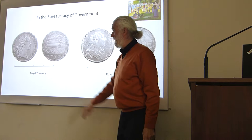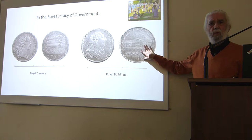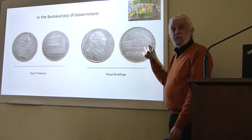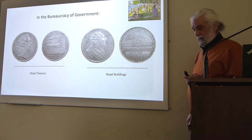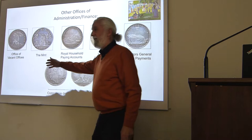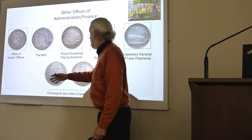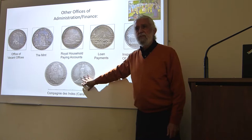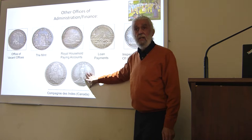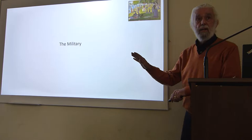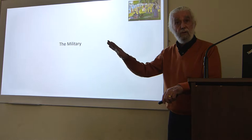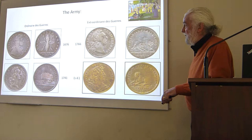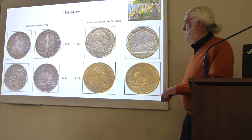Here we have the royal treasury — a very nice one from 1742. Here's one from the king's buildings, where hundreds of people worked with huge budgets — they built Versailles, for example. Here are some other government offices: the office of vacant offices, the mint, royal household paying accounts, loan payments, inspectors, and a series for the French colony in Canada. The military too — two major accounting offices in the army, with martial imagery. The propagandistic uses of these need to be underscored: on the front side it's 99% of the time a portrait bust of the king.